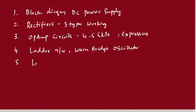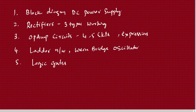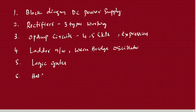Coming to Module 2, logic gates are very very important. You need to write the truth table, symbol, and the related expression for each logic gate. In this chapter itself, the half adder and full adder are also important topics to study.